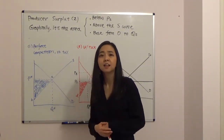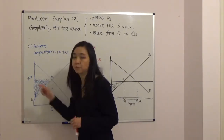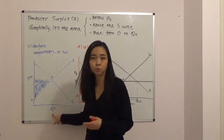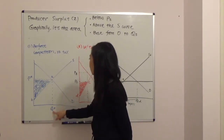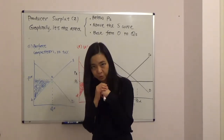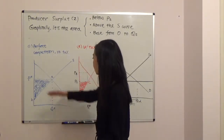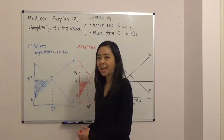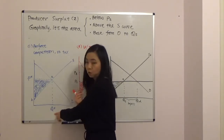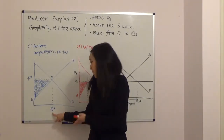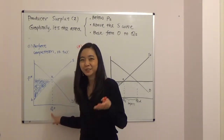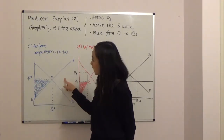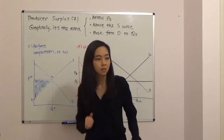The first case is the simplest: perfect competition and no tax. If there's no tax, then the price paid by the buyer will be the same as the price received by the seller, and quantity supply will be equal to quantity demanded — that's just the equilibrium quantity. So in this case, producer surplus for the entire market is the area below the price received by the seller, which is P star, above the supply curve. The base is from zero to equilibrium quantity, and producer surplus equals triangle area P star AB.